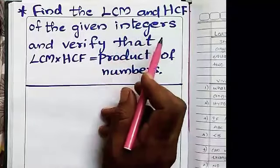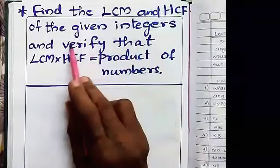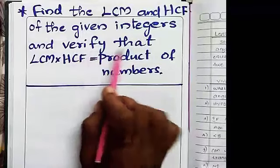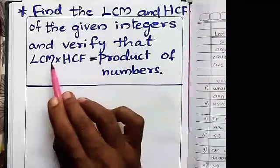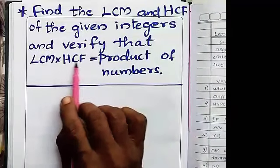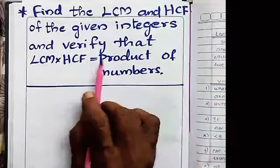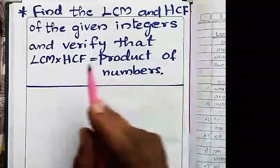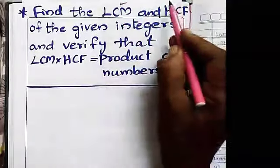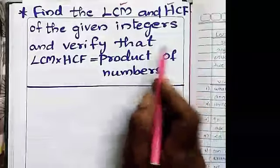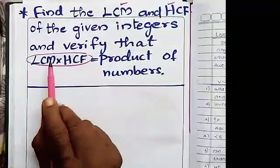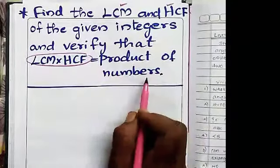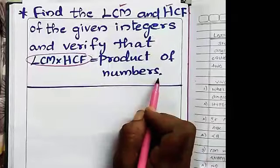First, find the LCM and HCF of the given integers and verify that HCF into LCM equals the product of the numbers. We are going to find the LCM and HCF, and after that find the product of these two. That will be the same as the product of the given numbers.